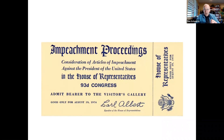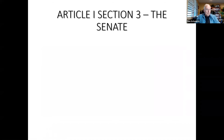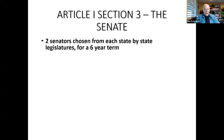Section 2 of Article I states that the House shall have the sole power of impeachment. Article I, Section 3 pertains specifically to the Senate — composed of two senators from each state, originally chosen by state legislators, serving for a six-year term. The 17th Amendment passed in 1913 changed that so that today the people elect senators from each state.